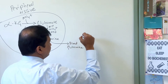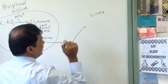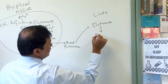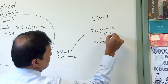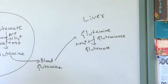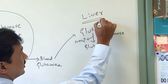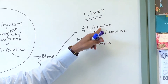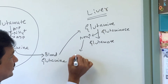One tissue that takes up glutamine from the blood is predominantly the liver. In the liver, a mitochondrial enzyme called glutaminase converts glutamine into glutamate, releasing ammonium ion (NH4+). This ammonium ion then enters the urea cycle for urea formation.